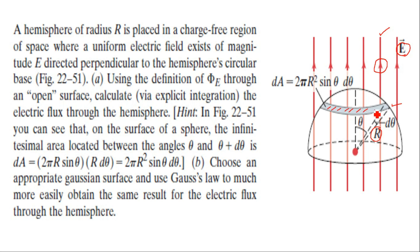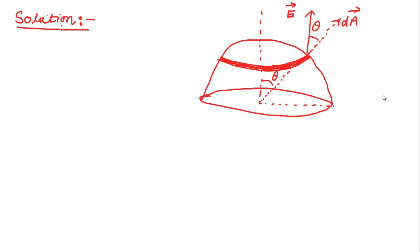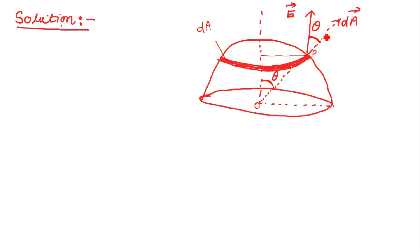The area of the shaded strip is given as 2πR² sinθ dθ. We will solve this using the definition of flux without using Gauss's law. The area vector corresponding to this shaded strip is always directed along the outward normal, and that outward normal at point P will be along the line joining the center of the hemisphere to point P.